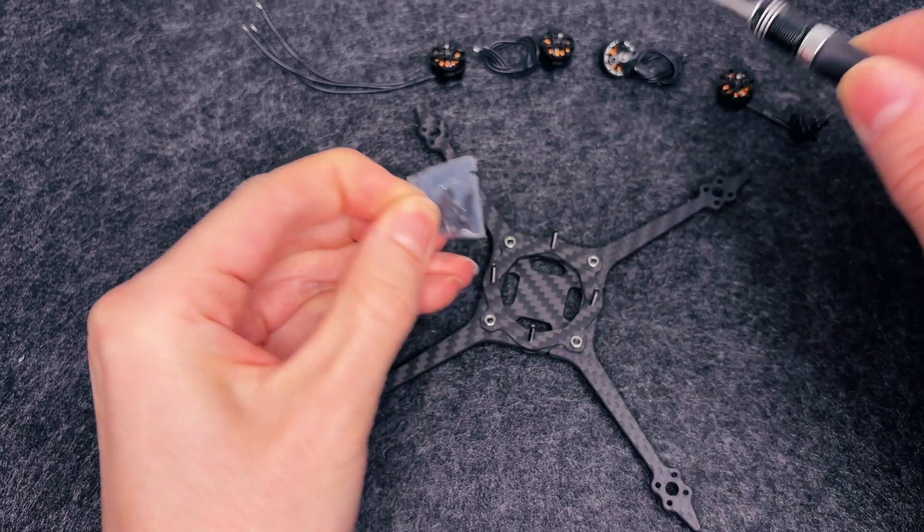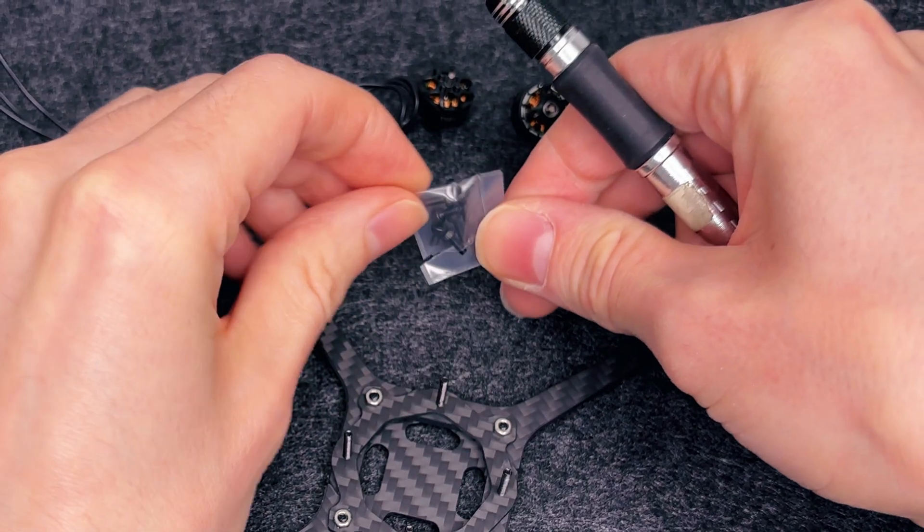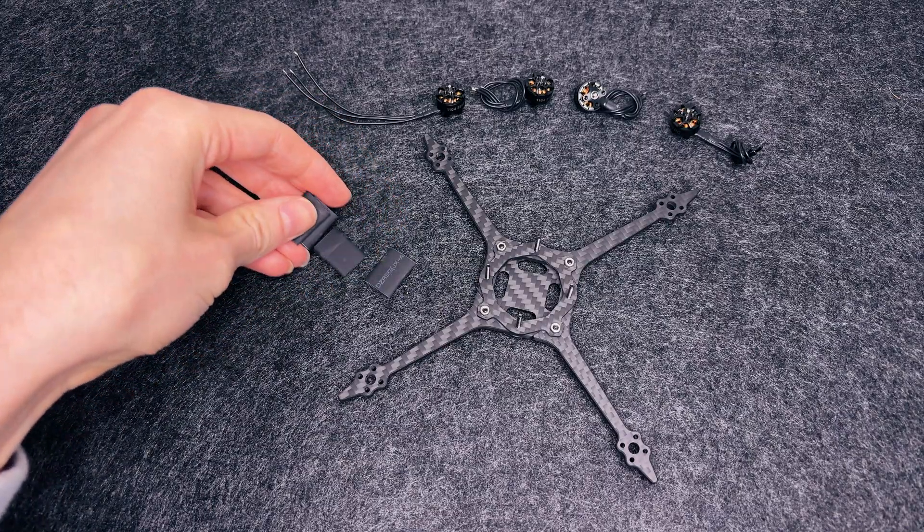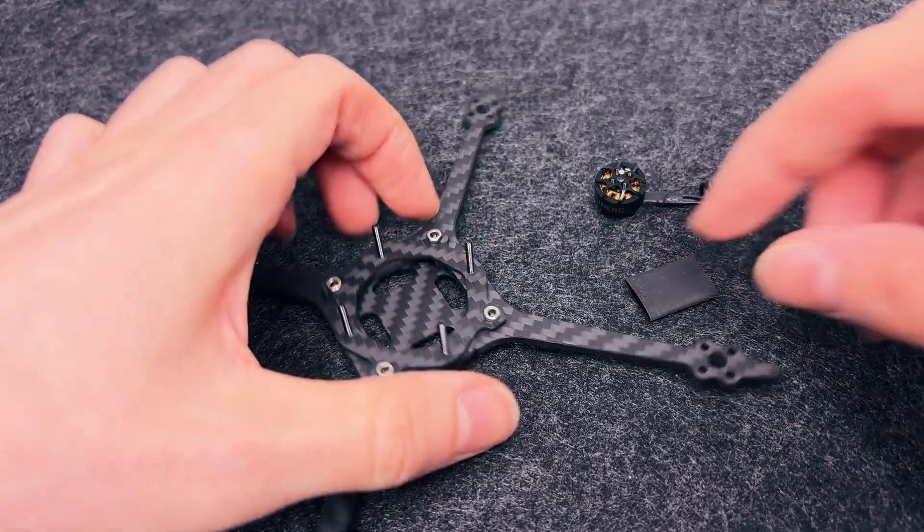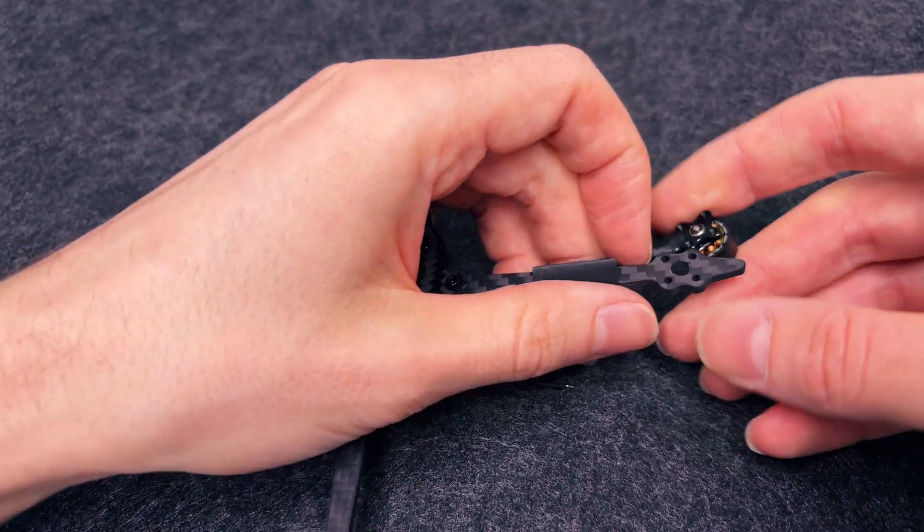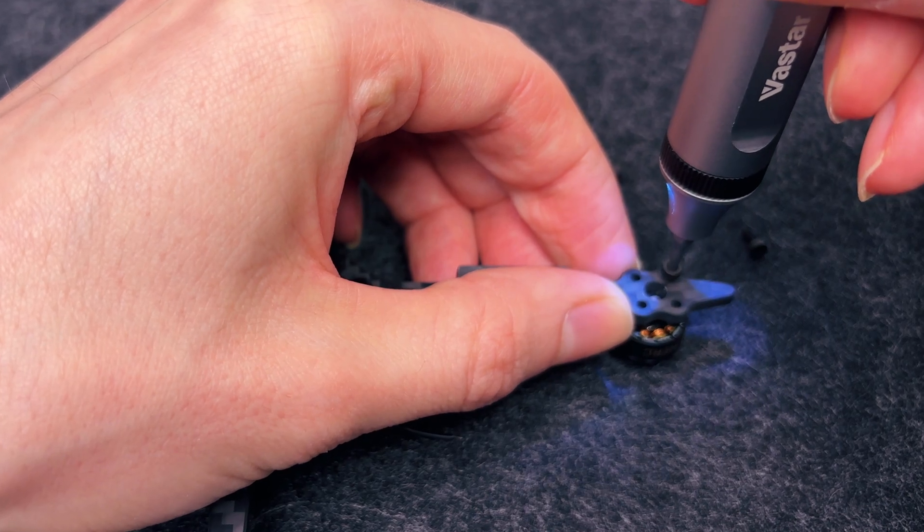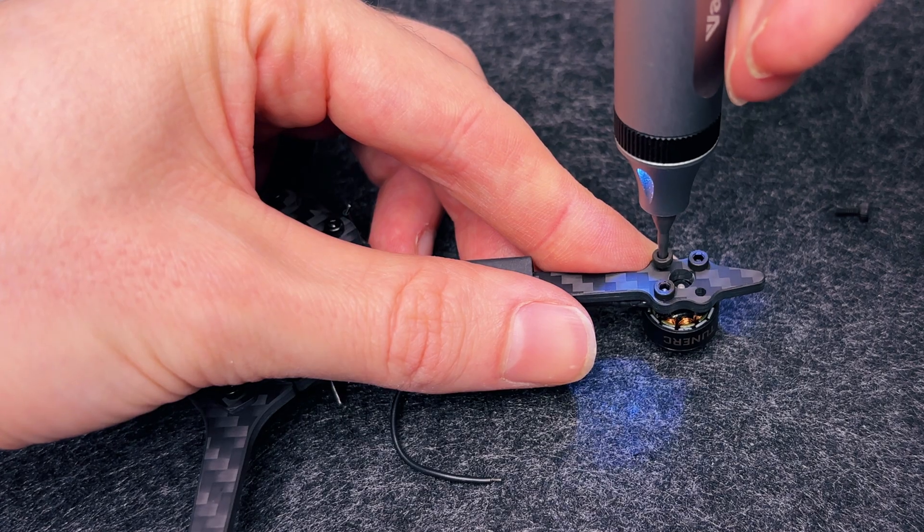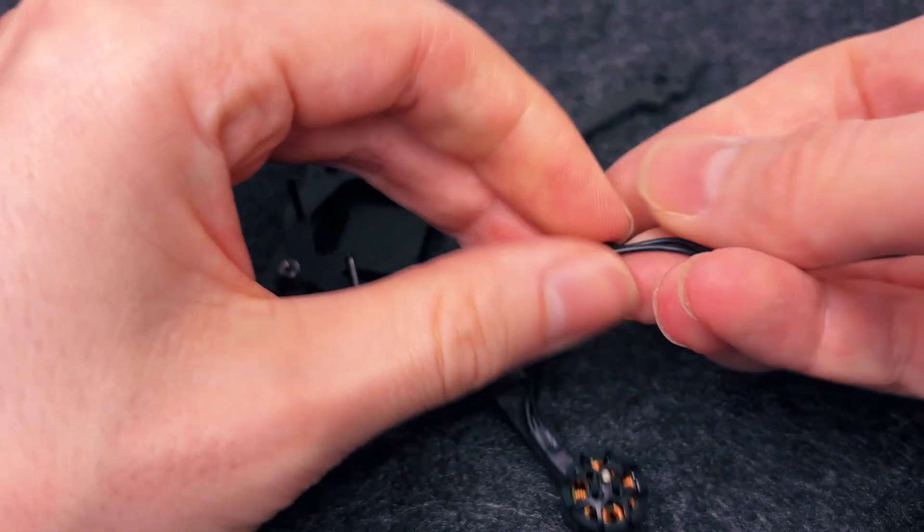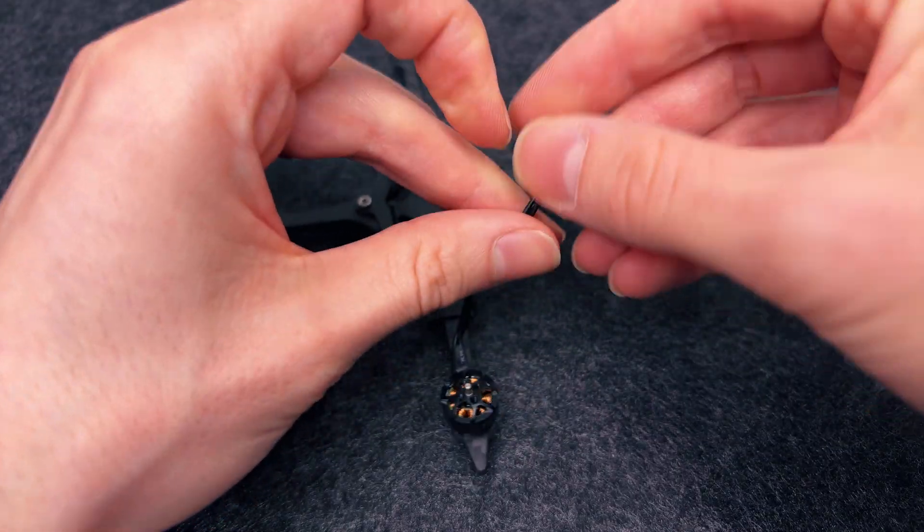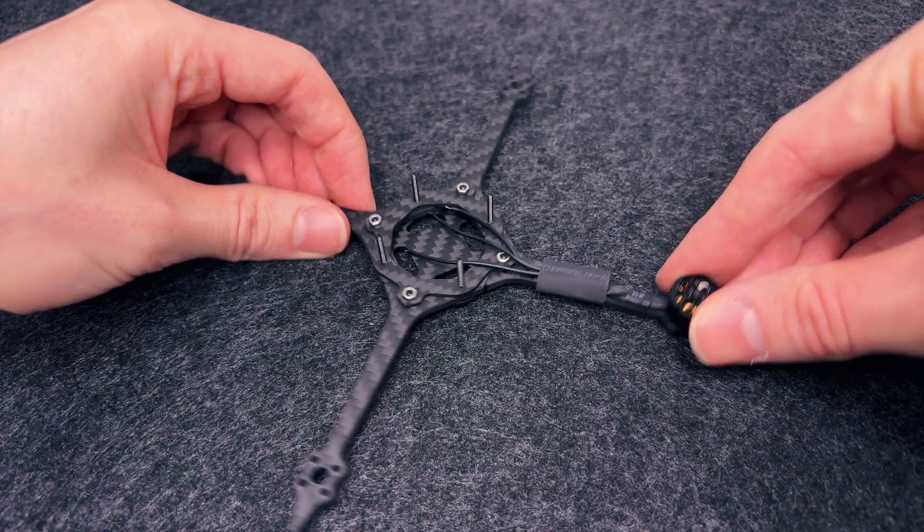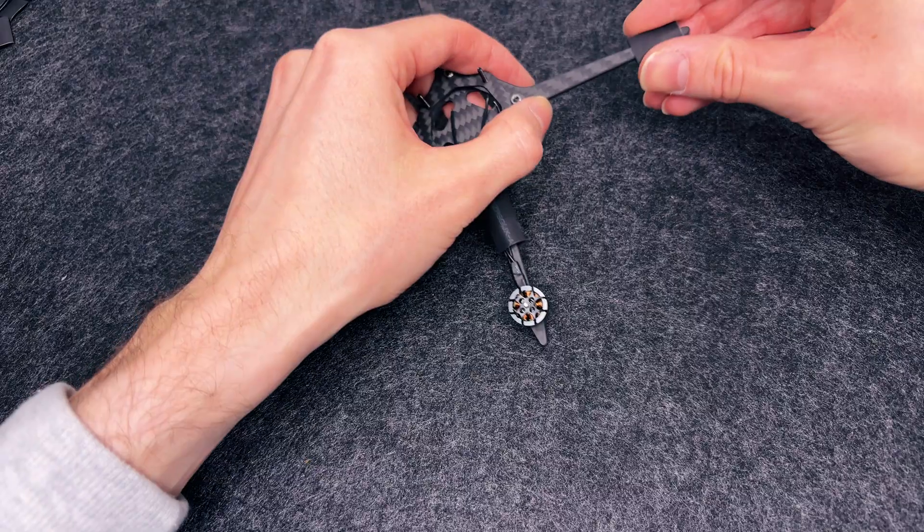They come neatly packed, and each one includes mounting screws. Which, by the way, are really small. So, if you drop one, good luck finding it. Alright, let's get one of these installed. First, we screw in four bolts. Then, we twist the wires together. Not just for looks, but to reduce electrical noise and keep things tidy. We feed them through the heat shrink tubing. Which, in my opinion, just looks way cleaner than zip ties or tape. One down, and three to go.